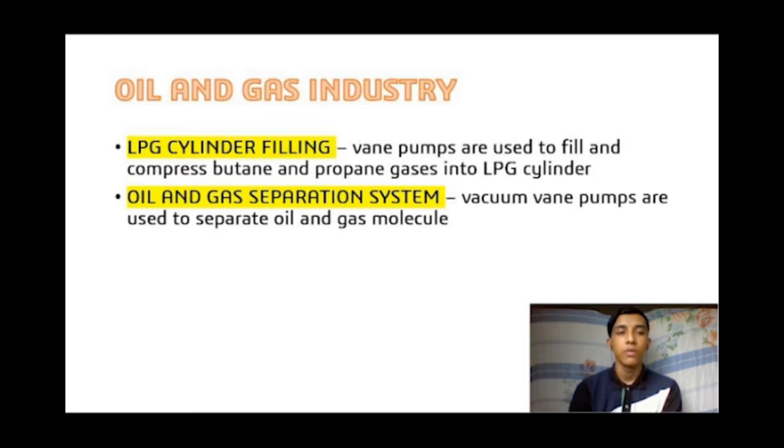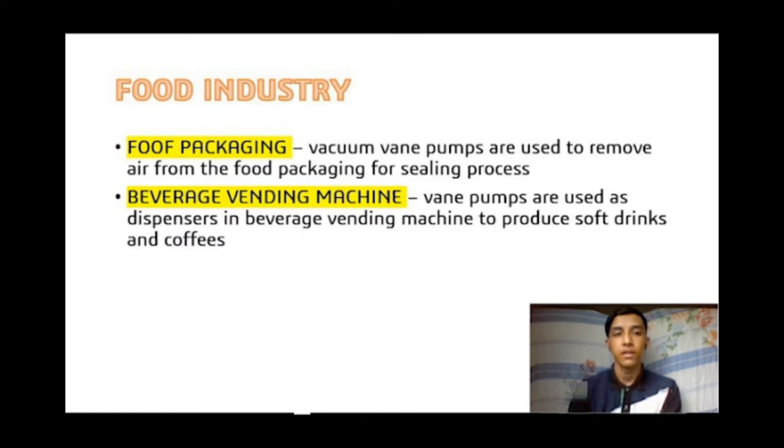In oil and gas industry: for LPG cylinder filling, vane pumps are used to fill and compress butane and propane gases into the LPG cylinder. In oil and gas separation systems, vacuum pumps are used to separate oil and gas molecules. In food industry: for food packaging, vacuum vane pumps remove air from food packaging for sealing. In beverage vending machines, vane pumps are used as dispensers to produce soft drinks and coffees.